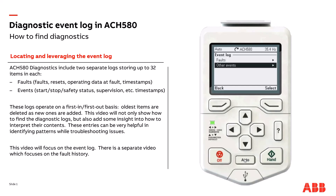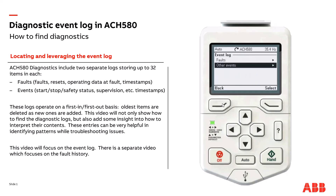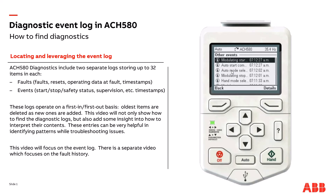Let's go back out and now transition to Auto. I don't have a run command active at this moment, so it's a simple transition from Hand to Auto — modulating stops and we're now in Auto mode. Now let's throw a start command by closing DI1 on the demo case. We can see that we've started in Auto mode: Auto mode selected, Auto start, and modulation started.